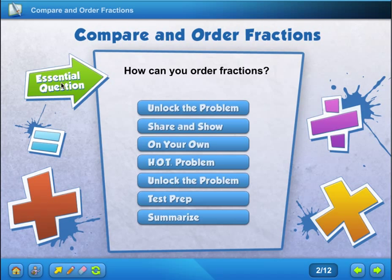Hi, everyone. We are on lesson 6.8. It is in your colored math book on page 257. Today we're going to look at to compare and order fractions. And the question asks, how can you order fractions? So it means like how you can put them in order from least to greatest or from greatest to least. Alright, let's get started.